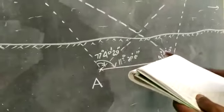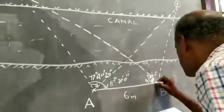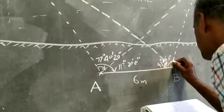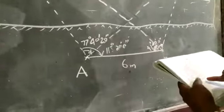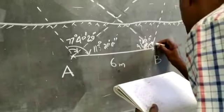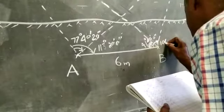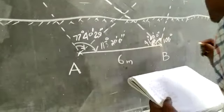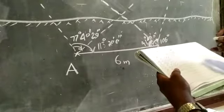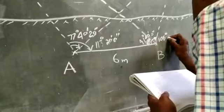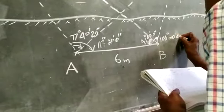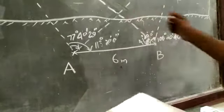And another angle is angle ABQ. That is, I'll write outside this place, 106 degrees, 20 minutes, 40 seconds. These are the angles.